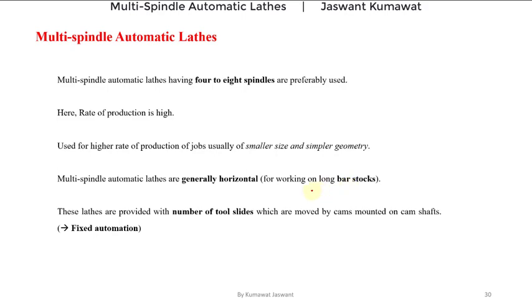These lathes are provided with a number of tool slides to perform multiple operations, and these tool slides are moved by cams mounted on a camshaft. That means these multi spindle automatic lathes are equipped with a fixed automation system. Nowadays, CNC-operated multi spindle automatic lathes are also widely used.